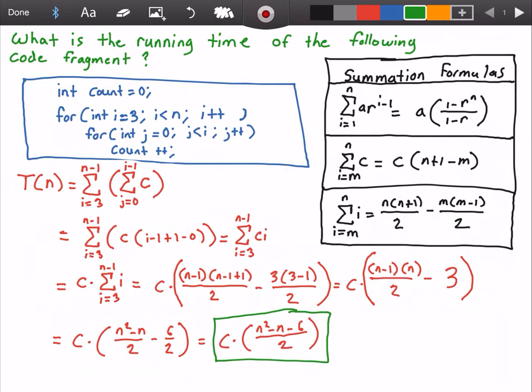And this implies that the code fragment is big O of n squared. Now if you're not sure how I knew that this was big O of n squared, I just took the greater order of growth, which was n squared.